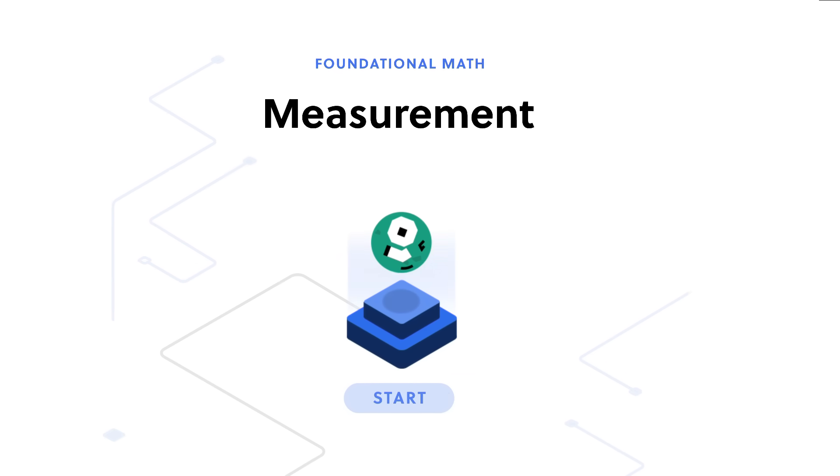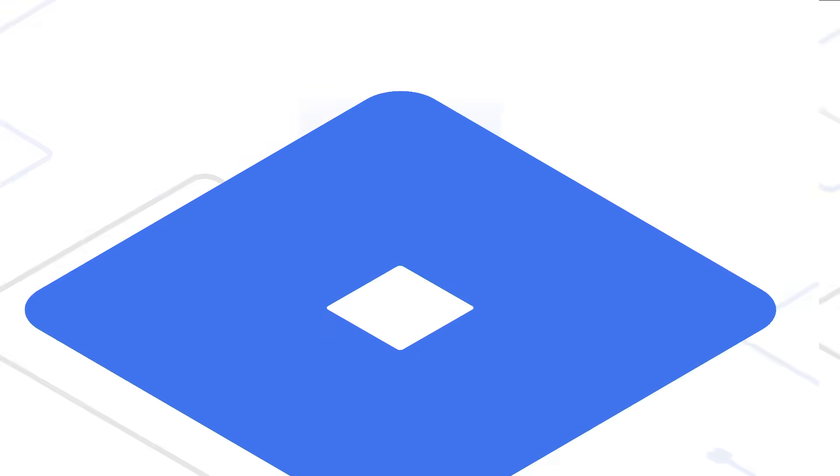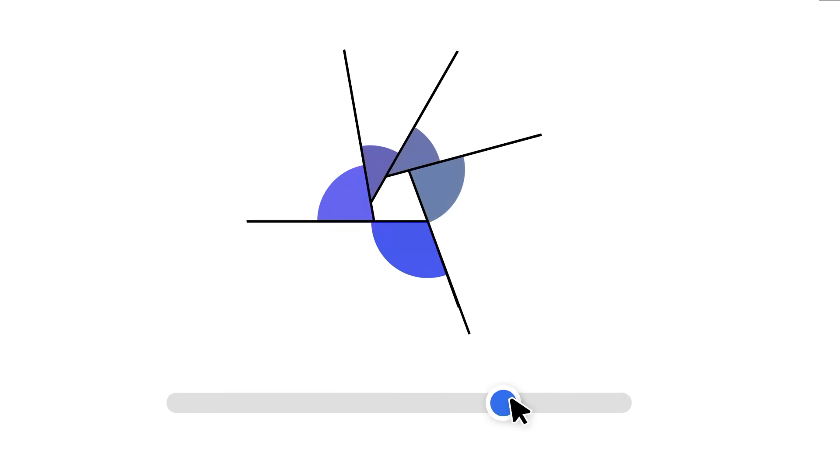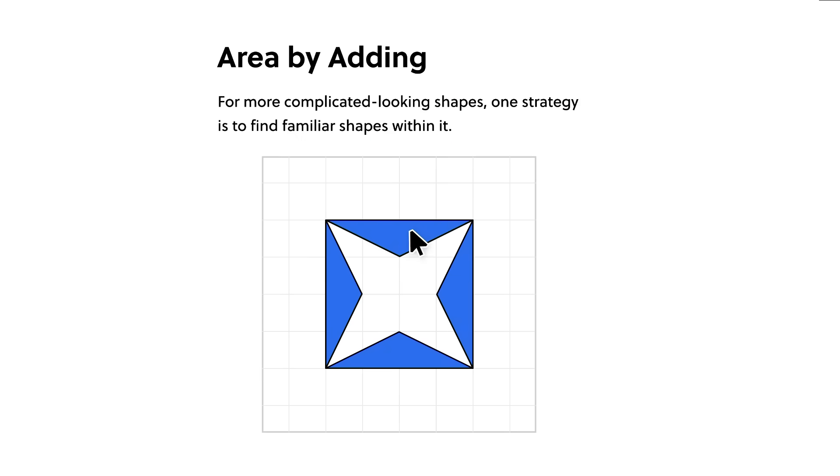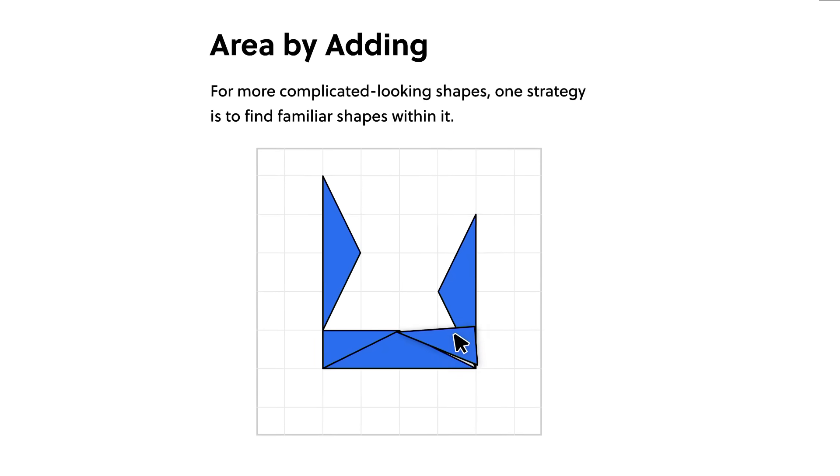Brilliant is the perfect platform for tinkerers, with thousands of interactive lessons in math, data analysis, coding, and AI crafted by an award-winning team from places like MIT and Google.